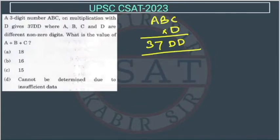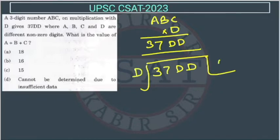So, how will we do it? We can do it in a different way. When we are multiplying and we are getting this, we can also say if we divide 37DD with D, we will get ABC. So, we can write it like this also. This will be easy now. We can do it here also, but this will be very easy.